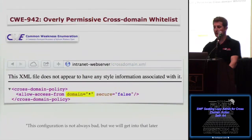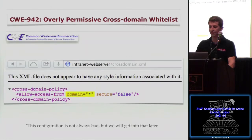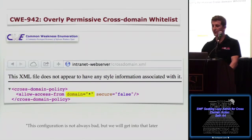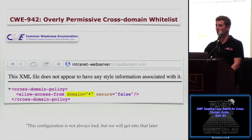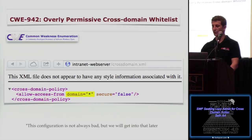Here is an example of what could be an overly permissive cross-domain.xml file. Again we're looking at the allow-access-from directive, but in this case the domain equals star. So we're not just trusting SWFs loaded from four whitelisted domains — we're allowing a SWF loaded from anywhere on the internet.